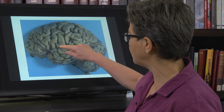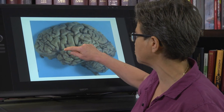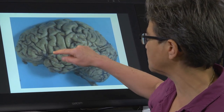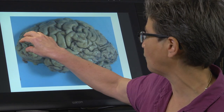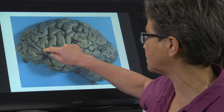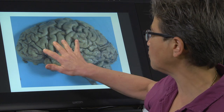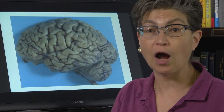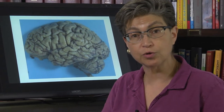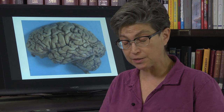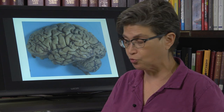Here's the sylvian fissure, and there's a central sulcus that comes up from it all the way to the top, separating the parietal lobe from the frontal lobe. In front of it is the motor cortex; in the back is the somatosensory cortex. Both areas give rise to corticospinal tract neurons and corticobulbar tract neurons, so they are collectively called part of sensory motor cortex.